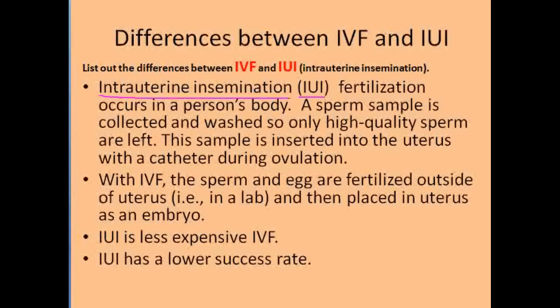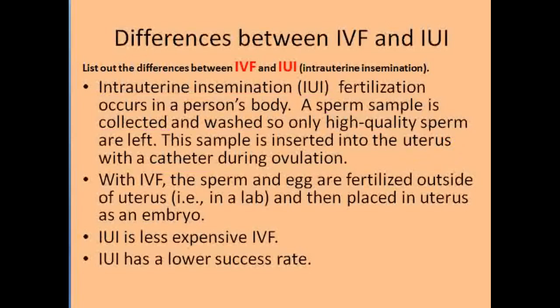In IUI, the sperm sample is collected and washed so that we obtain only high-quality sperm. This sample is then inserted into the uterus with the help of a catheter during the ovulation process, so that the lady becomes pregnant.